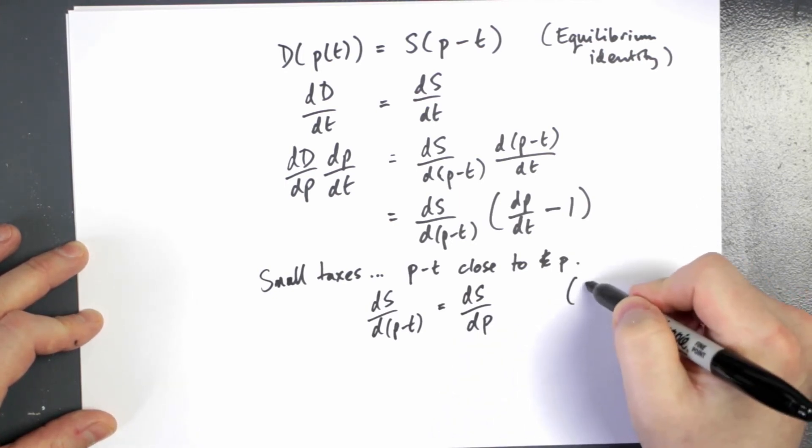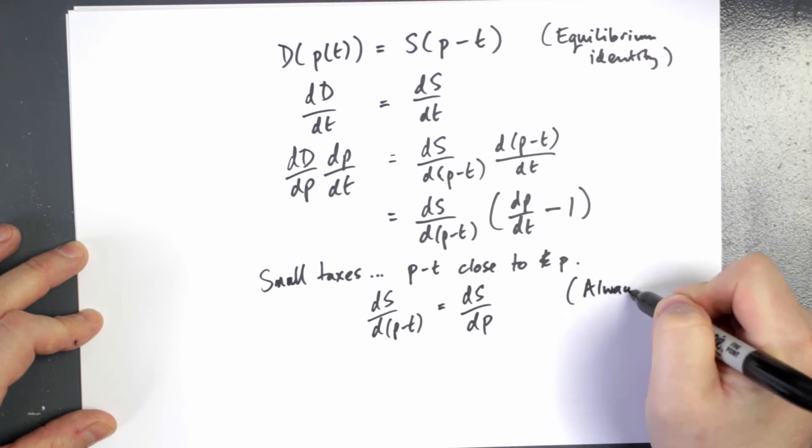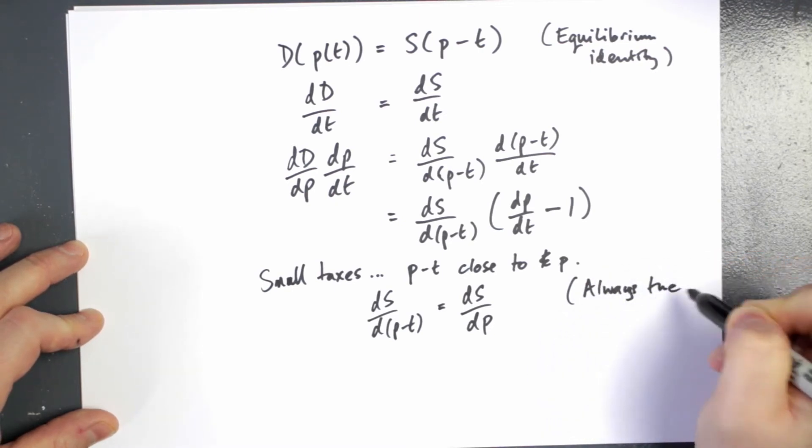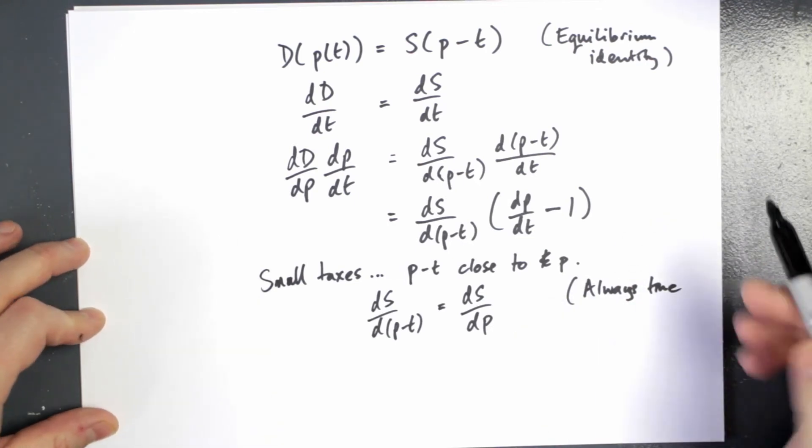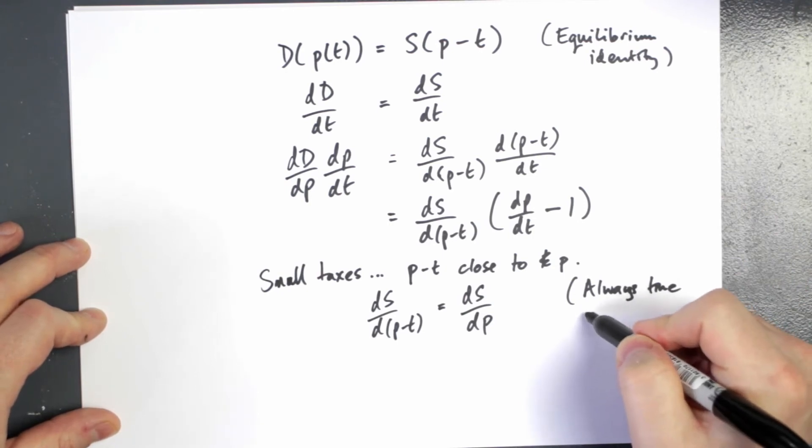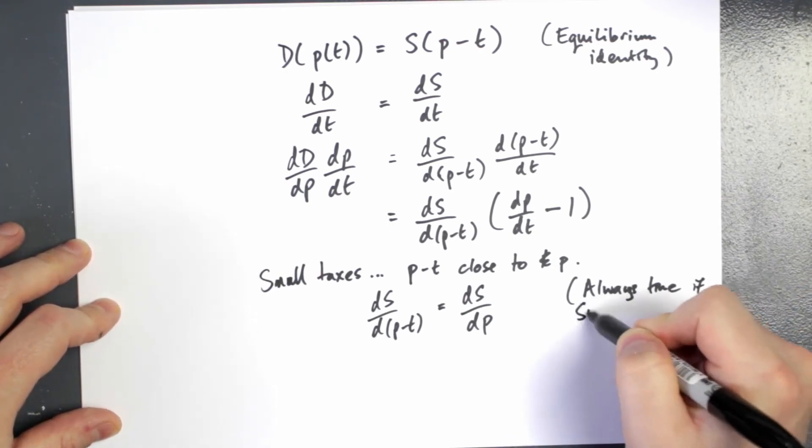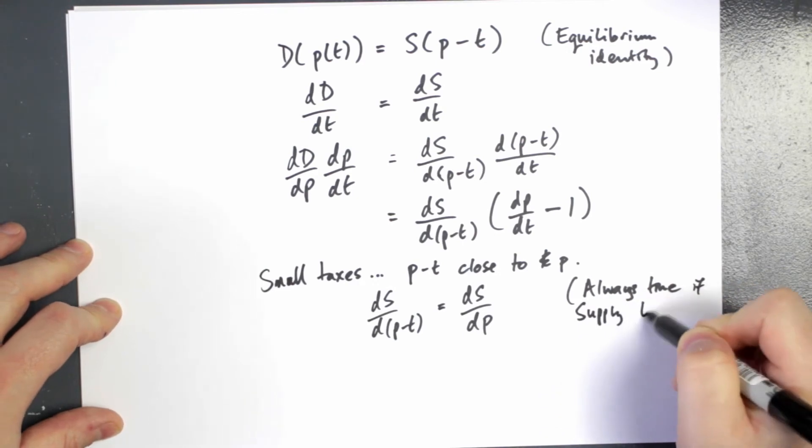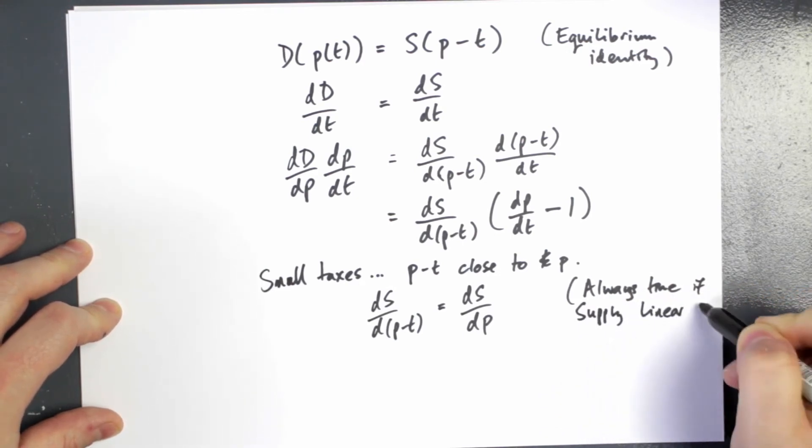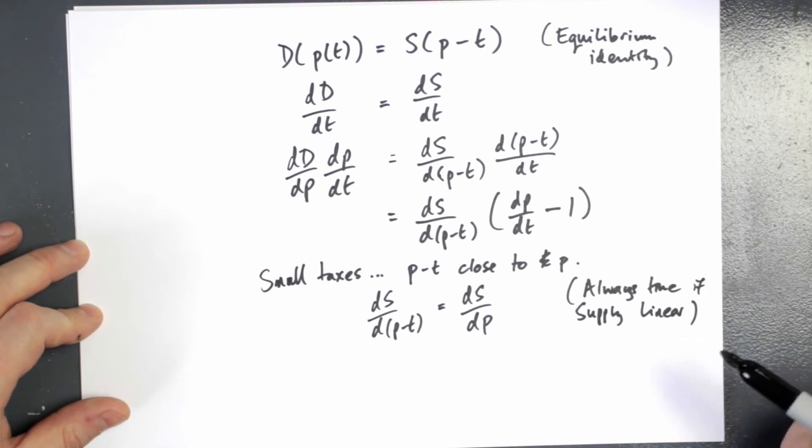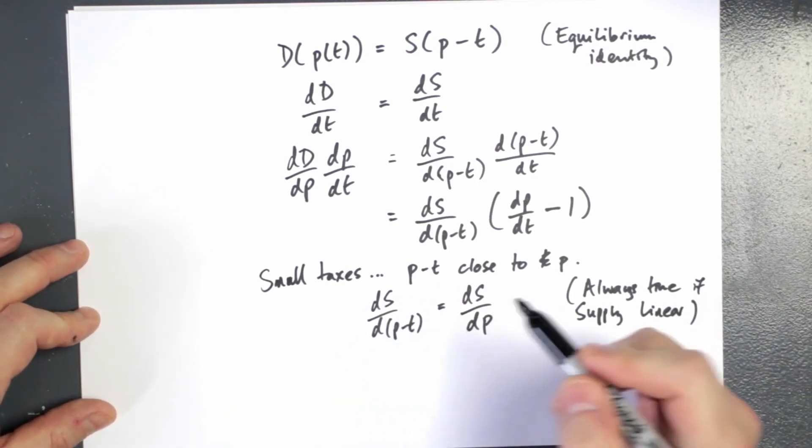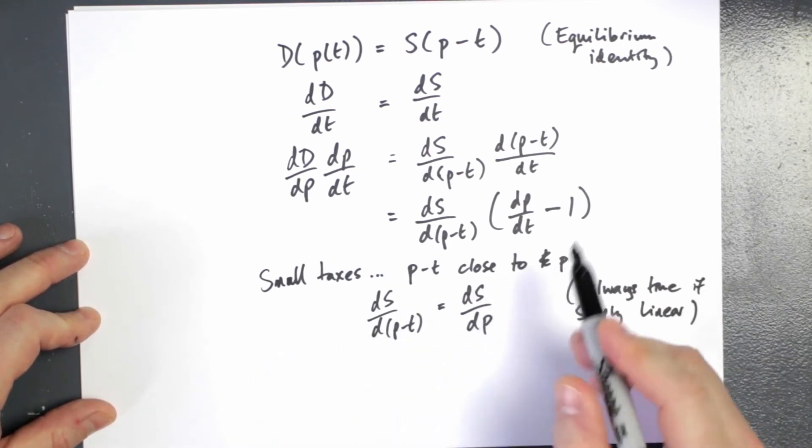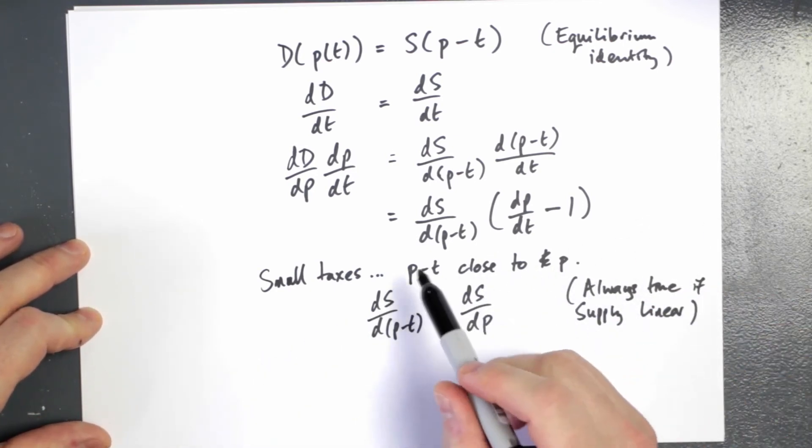Now, in the book, he says, this is always true. When I say always, I mean for any tax, however large the taxes, this is always true if supply is linear because the slope term is constant. For non-linear supply, it's approximately true, provided that the tax is small. So we're going to take it as true and say that our result holds for small tax levels.